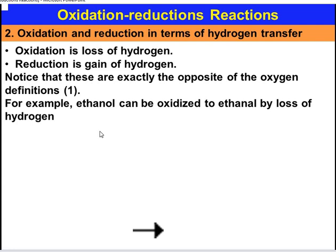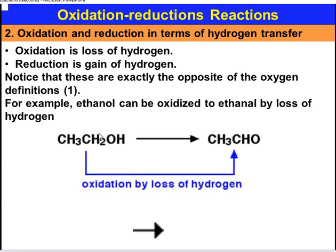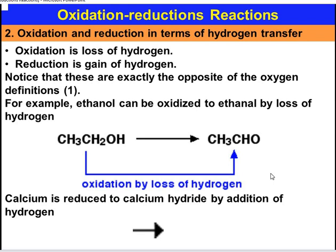Here we have examples. Ethanol can be oxidized by loss of Hydrogen. Ethanol contains CH3CH2OH, and the removal of Hydrogen from Ethanol is termed as Oxidation. Calcium is reduced to Calcium Hydride by addition of Hydrogen. When Calcium gains Hydrogen, this gain of Hydrogen produces Calcium Hydride, and the addition of Hydrogen is Reduction.